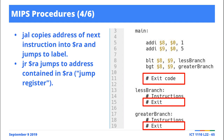What jump and link (JAL) does, essentially, is it copies the address of the next instruction into register RA and then jumps to the label. So it jumps to the label and copies the contents — the address of the next instruction to be executed — into RA. And you know where that address comes from: the program counter, PC.